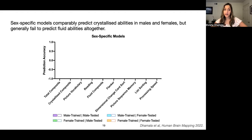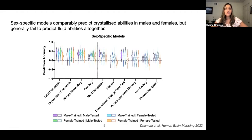Looking at the sex-specific models, we have the cognitive scores along the bottom and prediction accuracy on the y-axis, with male-trained male-tested results in purple, male-trained female-tested in blue, female-trained male-tested in green, and female-trained female-tested in orange. We see that total cognition is again equally predictable in both males and females using both male and female-trained models. The same is generally true for crystallized abilities, but models generally fail to predict fluid abilities altogether. This suggests that the total and crystallized models must be capturing some shared aspect of male and female relationships in functional connectivity and cognition, whereas for fluid abilities, they're not capturing meaningful relationships.